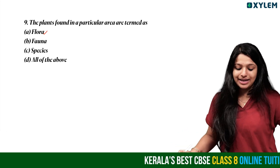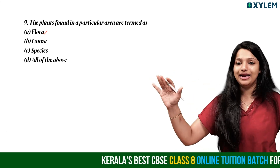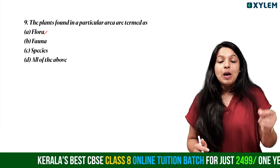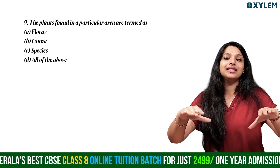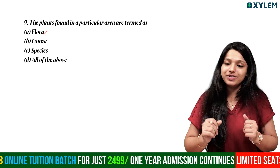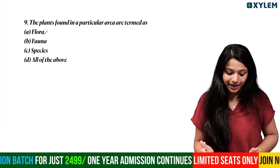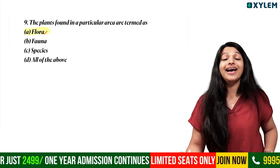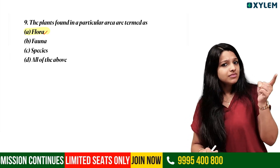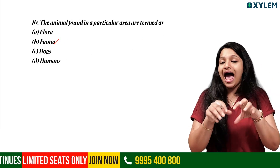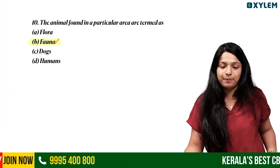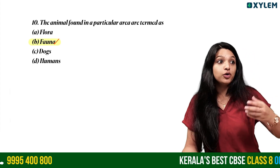Next question: Plants found in a particular area are termed what? We call plants found in a particular area by a biological term — flora. Plants in a region are called flora, and animals are called fauna.